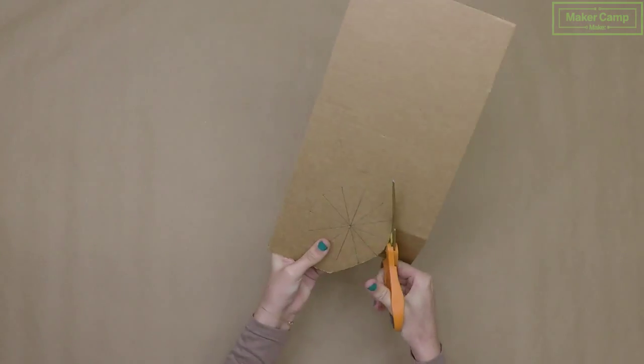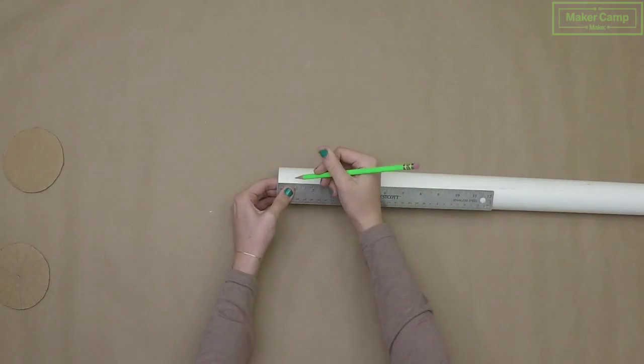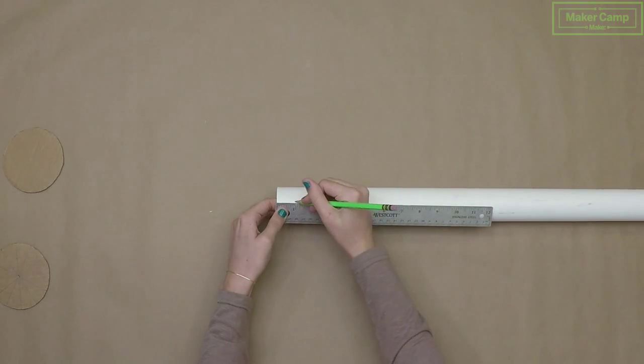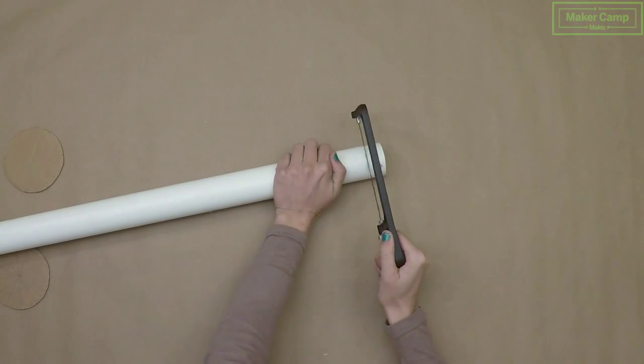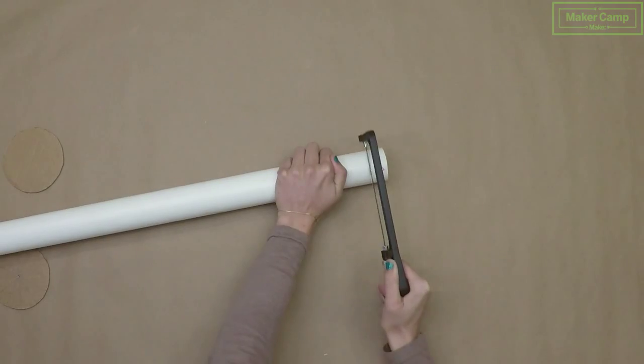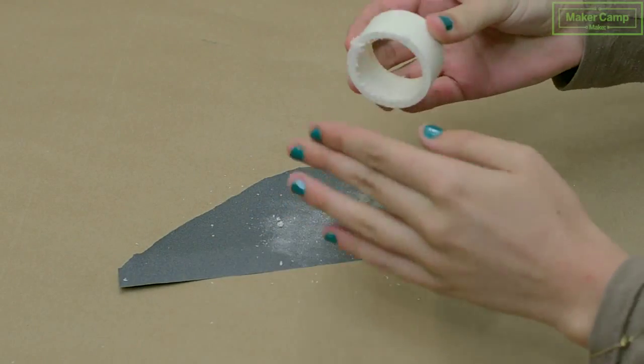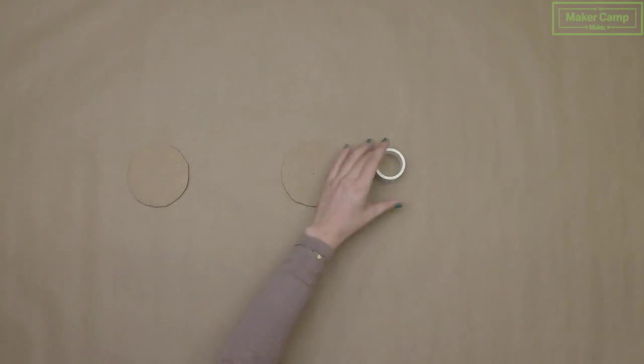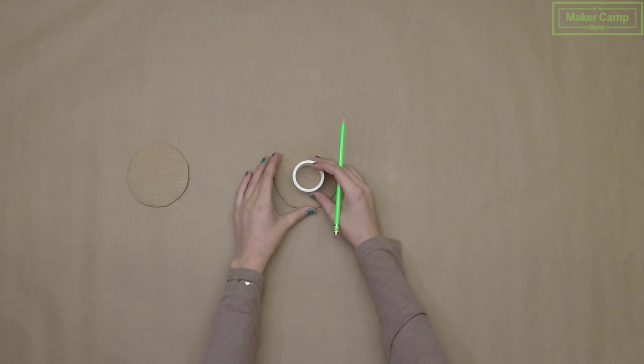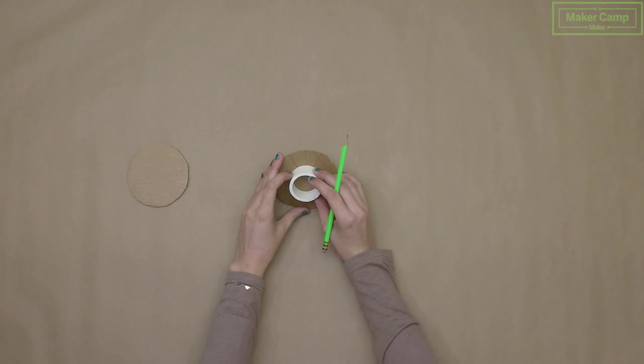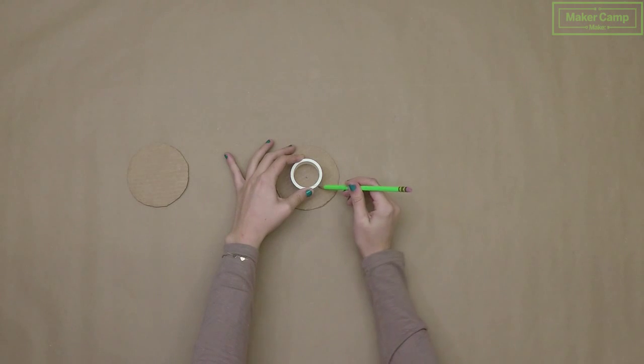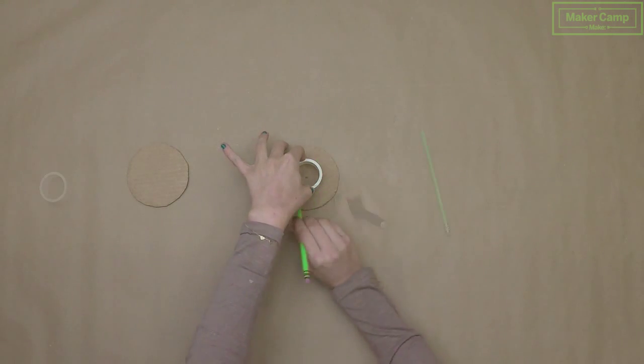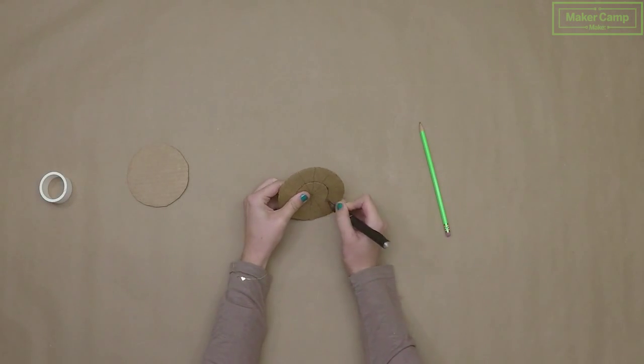Now measure a one inch length of PVC pipe and cut it using a hacksaw. Sand the edges down. Center the PVC on top of one of the cardboard disks, trace the PVC, and then cut it out.